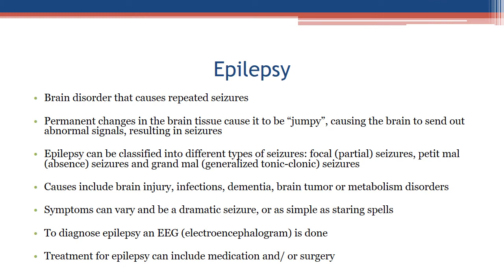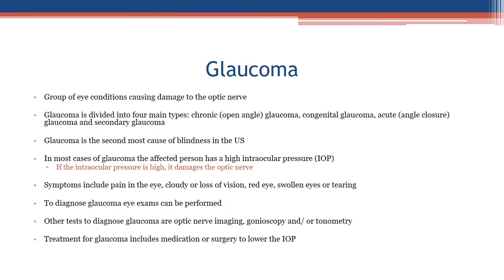Epilepsy — a brain disorder that causes repeated seizures: permanent changes in brain tissue cause the brain to send out abnormal signals, resulting in seizures. Epilepsy can be classified into different types: focal/partial seizures, petit mal/absence seizures, and grand mal/generalized tonic-clonic seizures. Causes include brain injury, infections, dementia, brain tumor, or metabolic disorders. Symptoms range from dramatic seizures to simple staring spells. Diagnosis is made using an electroencephalogram (EEG); treatment includes medication and/or surgery.